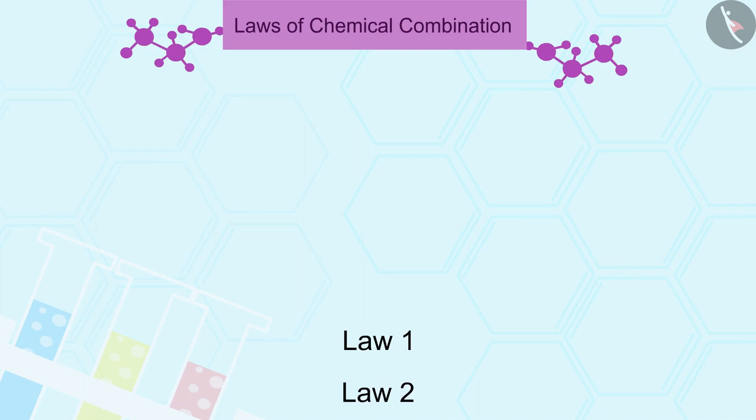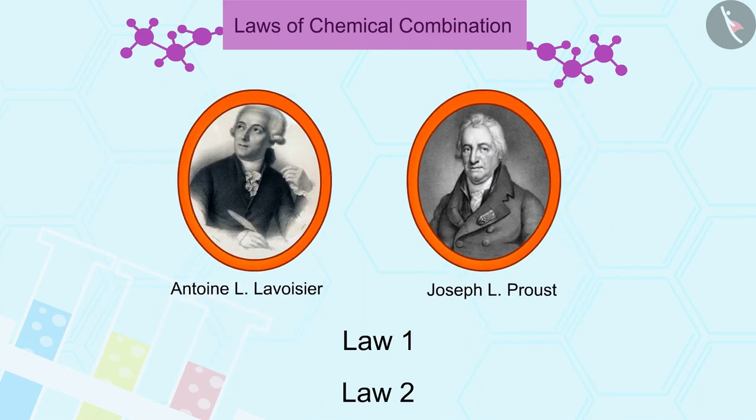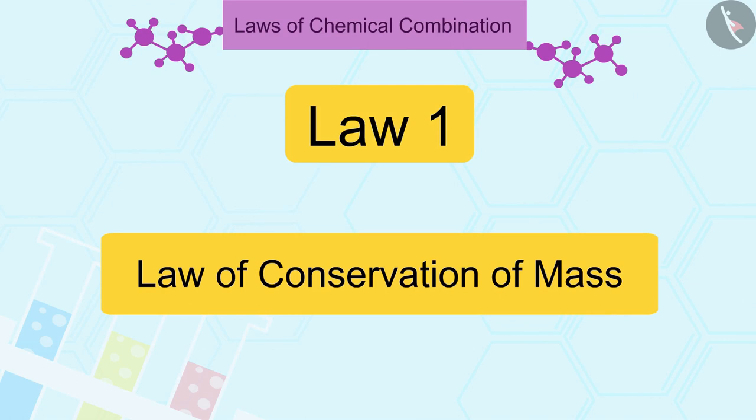Two laws of chemical combination were established after much experimentation by Lavoisier and Joseph L. Proust. Let us look at the first law. The first law is the law of conservation of mass.